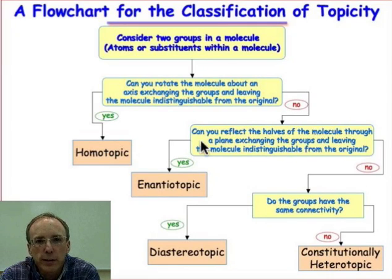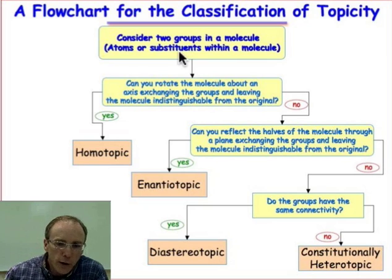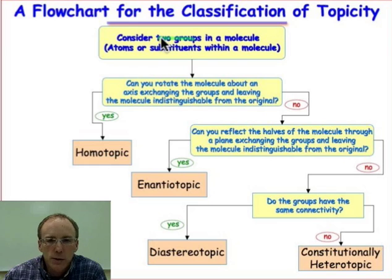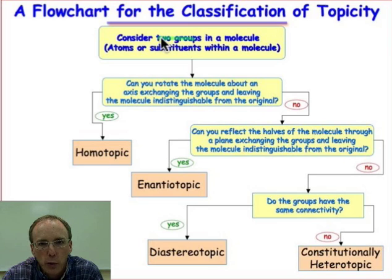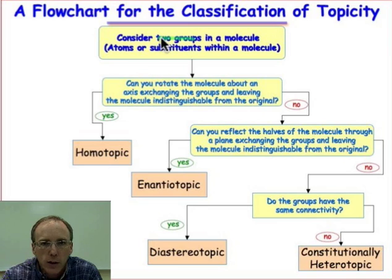The substitution test is one way to determine topicity of groups of atoms in a molecule, but I want to show you another way here because sometimes the substitution test can be a little tricky to apply. Our starting point is two groups of atoms — it might be two phenyl groups, two methyl groups, maybe two chlorine atoms — and we want to know how they're related. We're going to ask a series of questions, up to three, but as soon as we get a yes, we're done. We must ask the questions in the order they're presented.